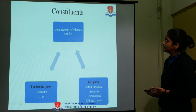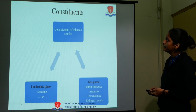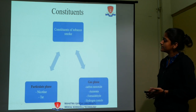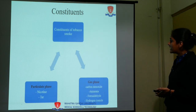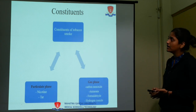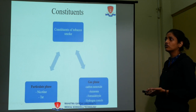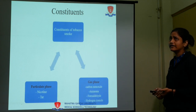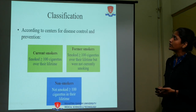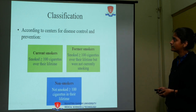The constituents of tobacco smoking exist in two phases. In the particulate phase there is nicotine and tar. In the gas phase there is carbon monoxide, ammonia, formaldehyde, and hydrogen cyanide. There are various methods of tobacco smoking, like cigarette, hookah, and bidi.